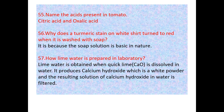How is lime water prepared in the laboratory? Lime water is obtained when quicklime — calcium oxide — is dissolved in water. Calcium oxide dissolved in water produces calcium hydroxide, a white powder. The resulting solution of calcium hydroxide in water is filtered to give lime water. When you blow into lime water, it turns milky.